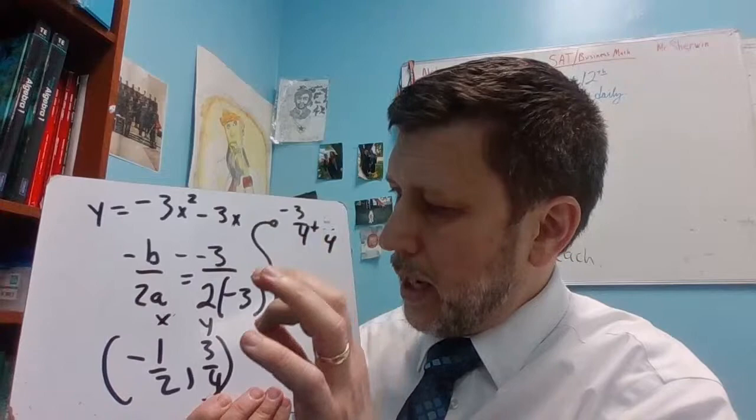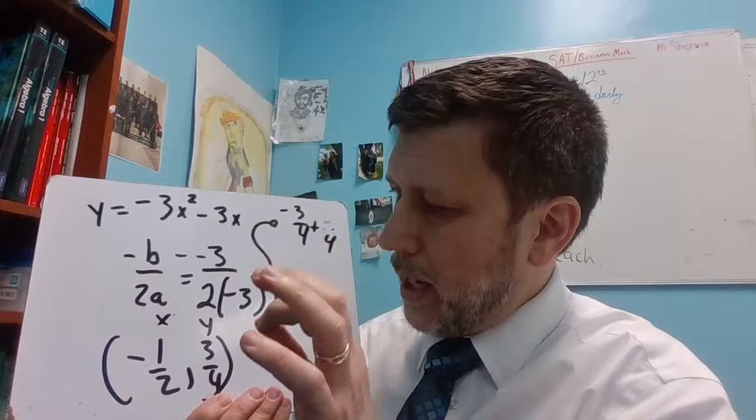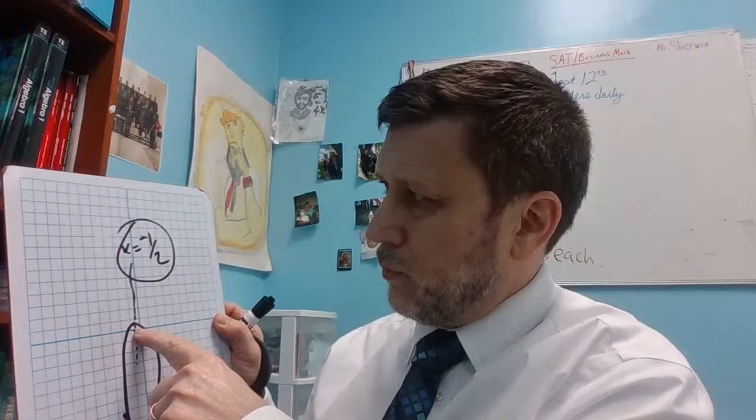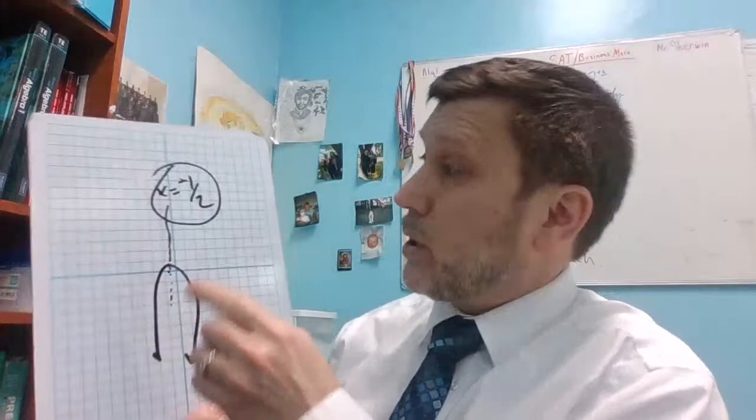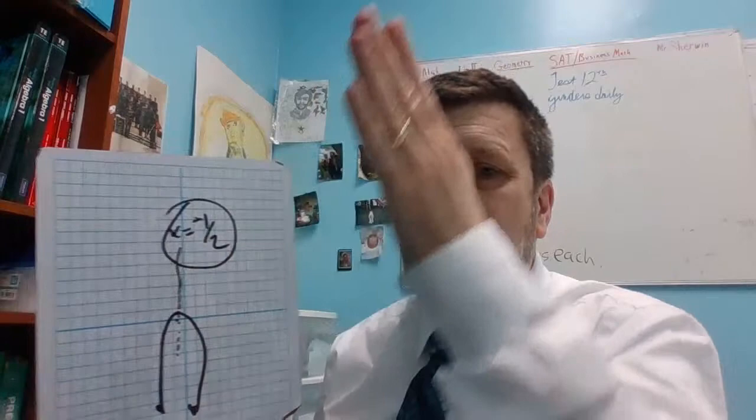The axis of symmetry is negative 1 half. Now, I did all the other work, so it's at negative 1 half is the x, negative 1 half, and you go up 3 fourths. But the axis of symmetry itself is x equals negative 1 half.